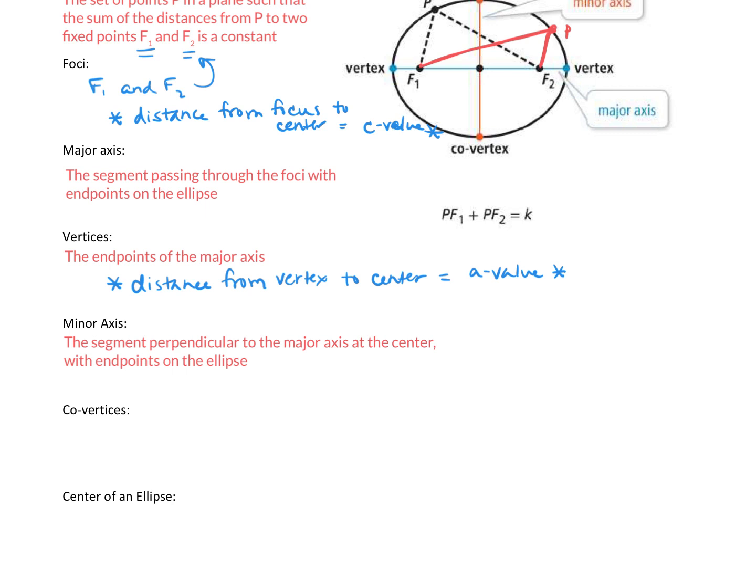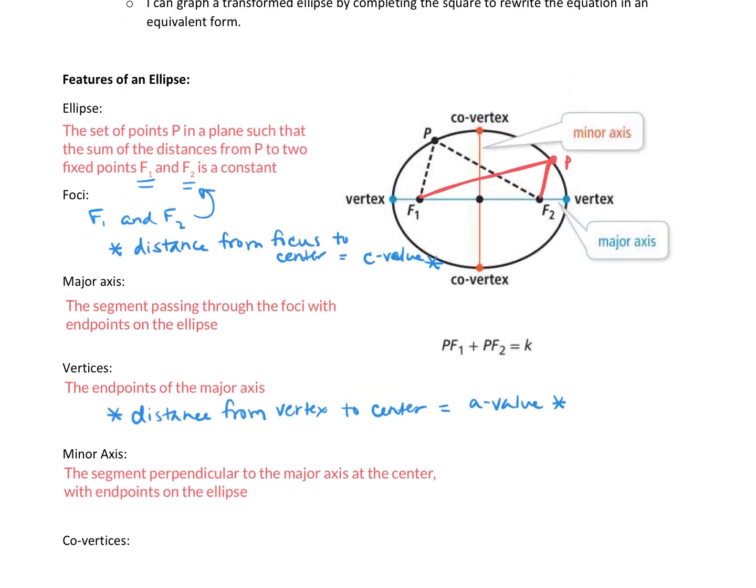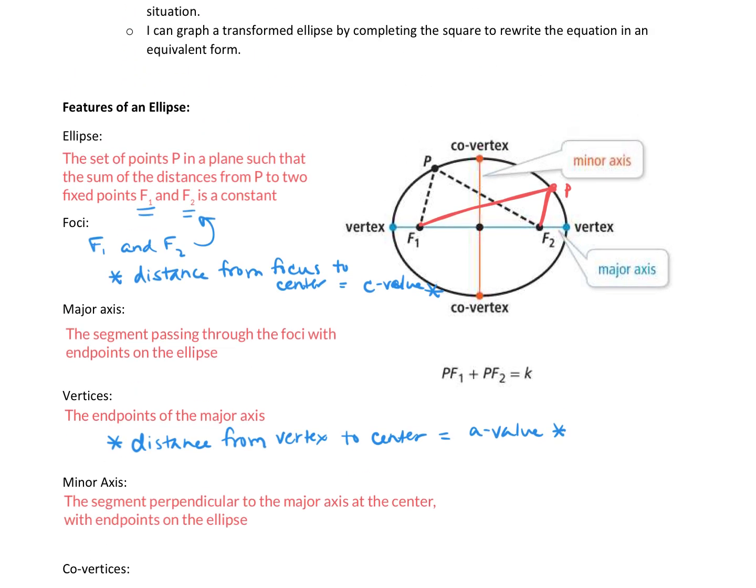Alright, next we have the minor axis. This is the segment that is perpendicular to the major axis at the center, that's where they intersect, with endpoints on the ellipse. So if we look at our picture, here's our major axis right here, here's our minor axis. You can see the endpoints are on the ellipse as well.